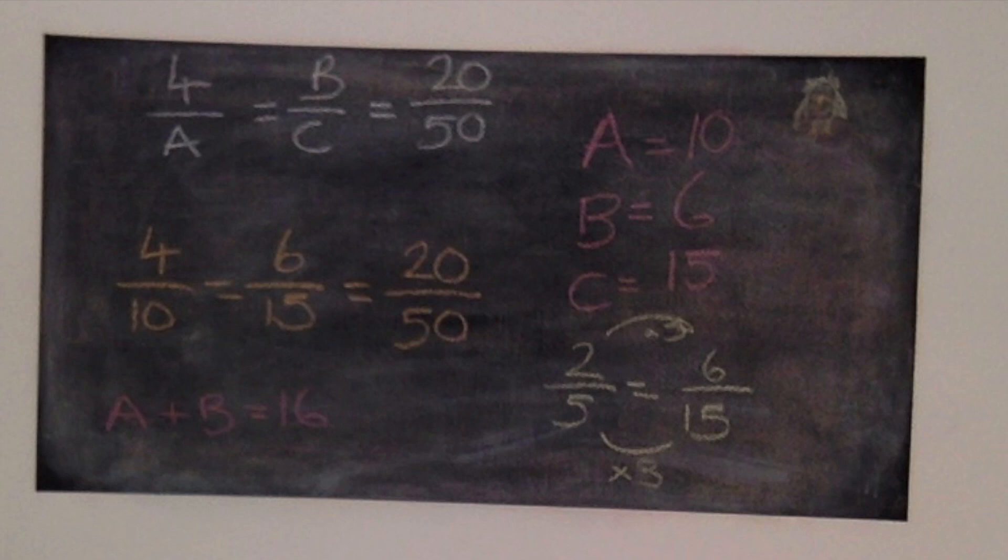And we can do this by looking at the bottom where it says A plus B equals 16 and it makes sure that we understand that 2/5ths is equal to 6/15ths. So really well done if you got that correct.